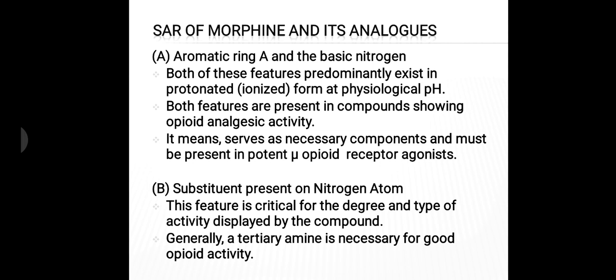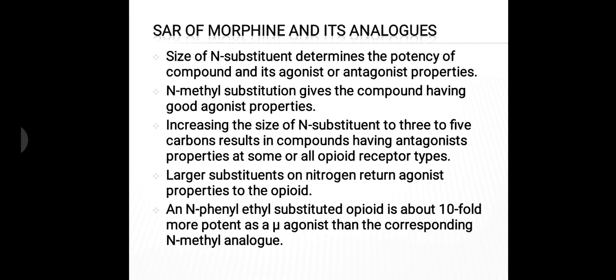The second part is the substituent present on the nitrogen atom. This particular feature is critical for the degree and type of activity displayed by the compound. In general, a tertiary amine is necessary for good opioid activity. The size of the substituent present on the nitrogen atom determines the potency of the compound and whether it will serve as an agonist or antagonist.